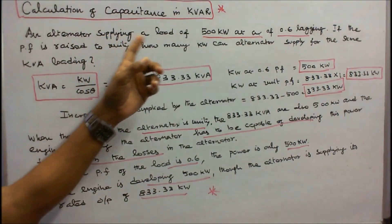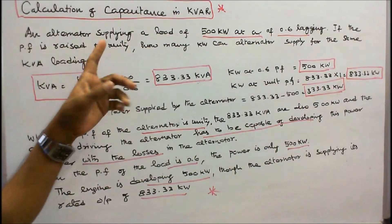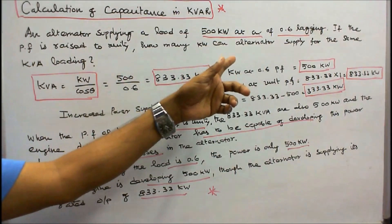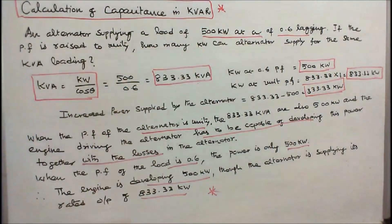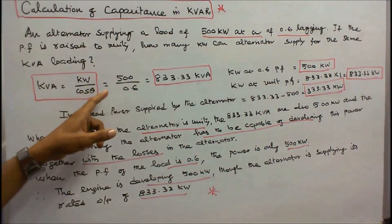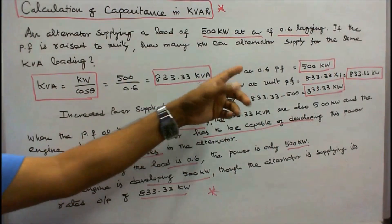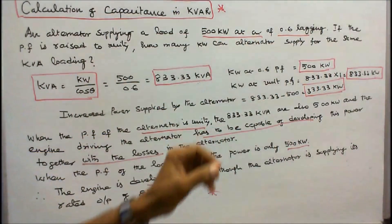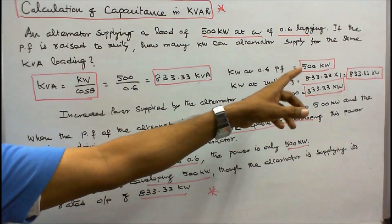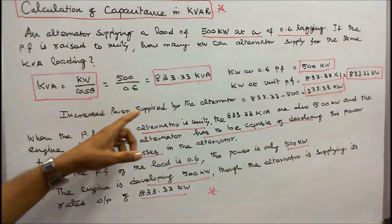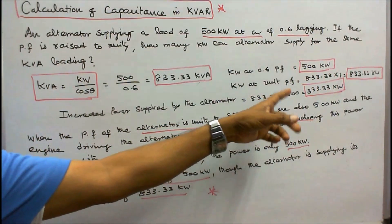An alternator supplying a load of 500 kilowatts at a power factor of 0.6 lagging. If the power factor rises to unity, how many kilowatts can the alternator supply for the same KVA loading? KVA equals kilowatts divided by cos theta, which equals 500 divided by 0.6, giving 833.33 KVA. Kilowatts at 0.6 power factor equals 500 kilowatts. Kilowatts at unity power factor equals 833.33 times 1, which equals 833.33 kilowatts. Therefore, the increased power supplied by the alternator equals 833.33 minus 500, which equals 333.33 kilowatts.